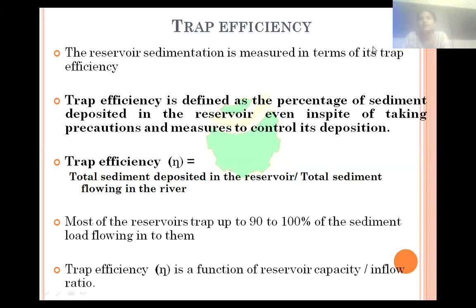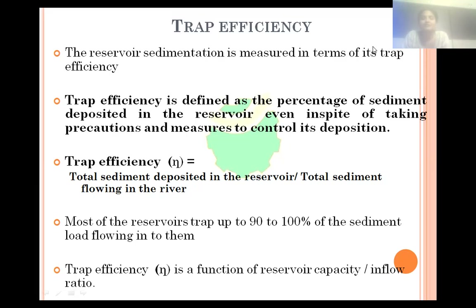So, what is the use of Trap Efficiency? Trap Efficiency is required to determine the lifetime of a reservoir — how many years the reservoir will last. So, the reservoir lifetime is determined based on this Trap Efficiency. Trap Efficiency is defined as the percentage of sediment deposited in the reservoir, in spite of taking precautions and measures to control its deposition. How much percent of sediment is deposited in the reservoir — that is called the Trap Efficiency.